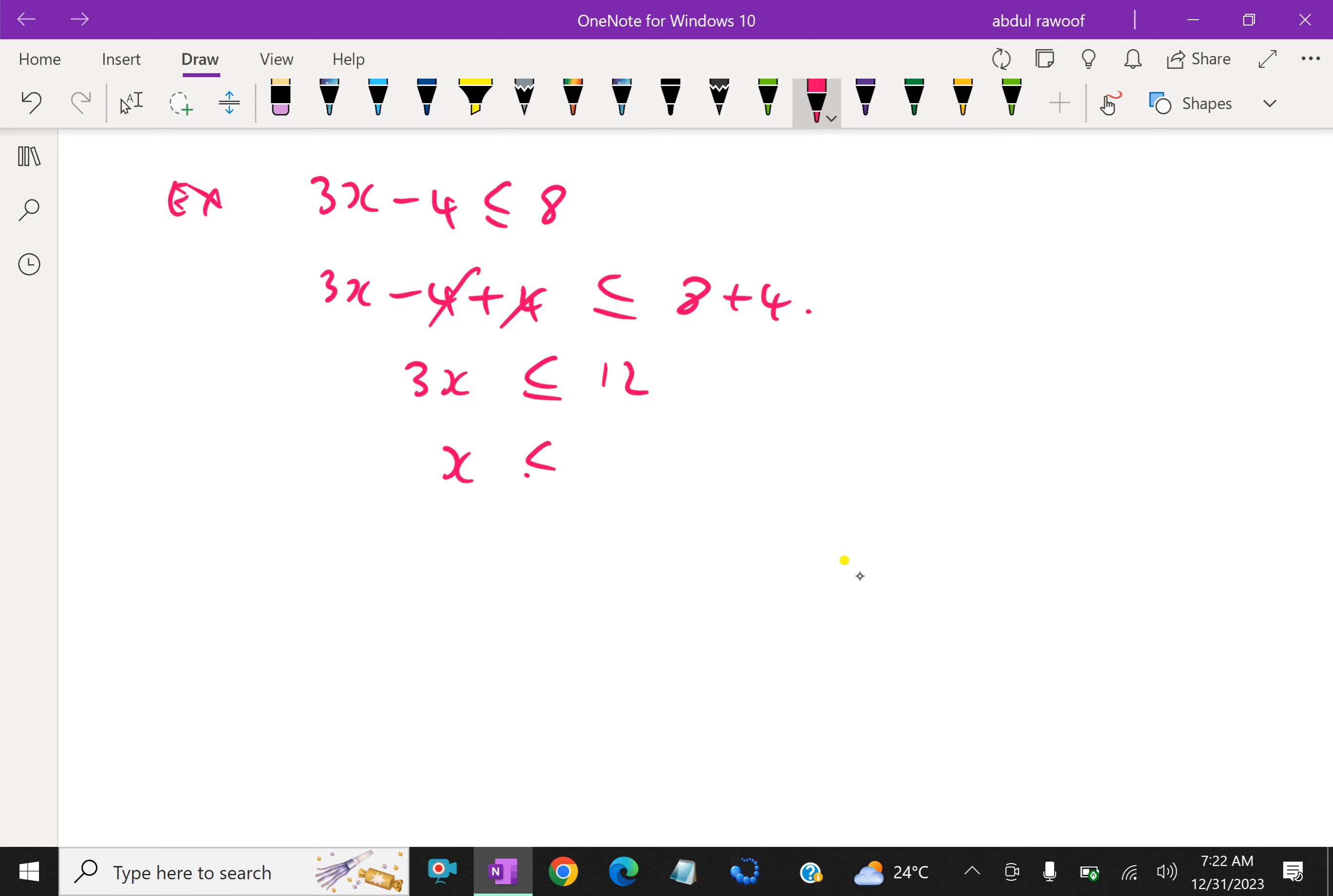x is less than or equal to 4. How to represent in number line? Look at here. So this is x equal to 4. x is less than or equal to 4. The equals sign is also there. This is the graph representing.